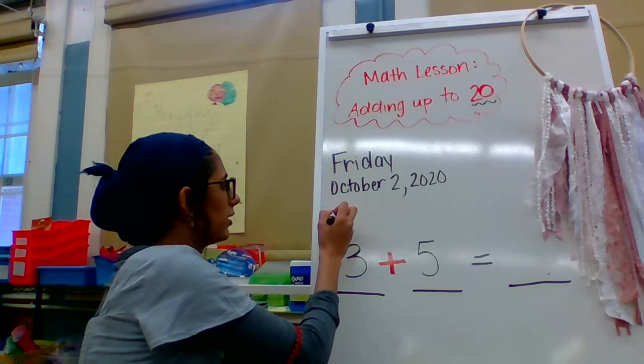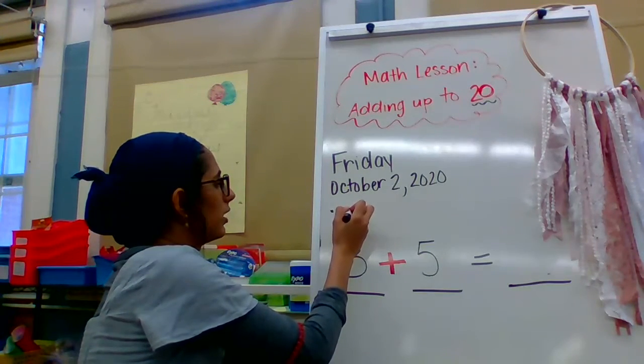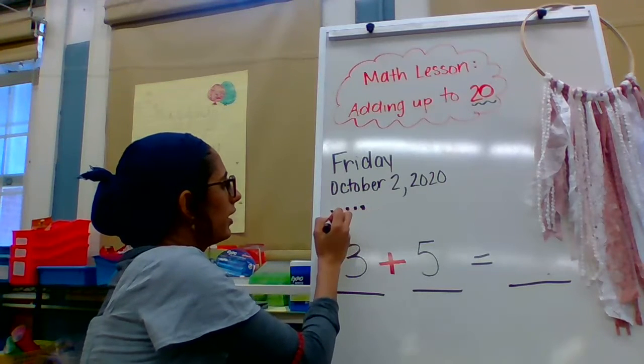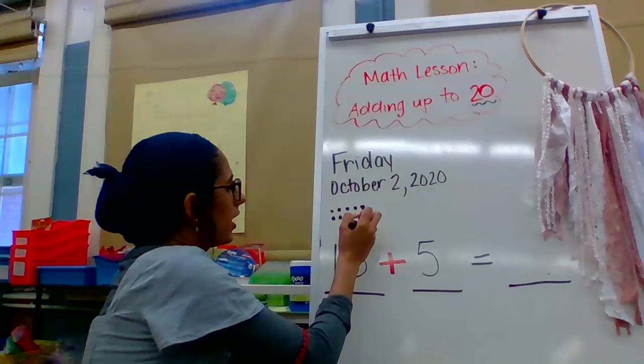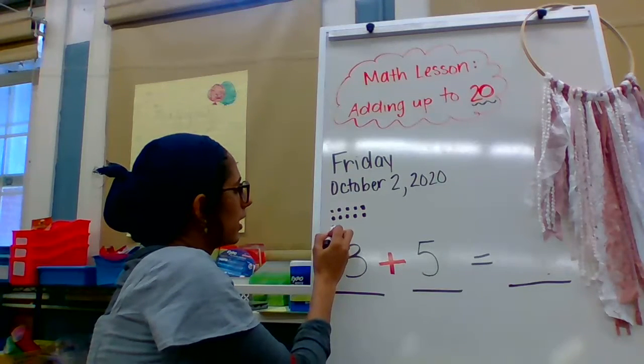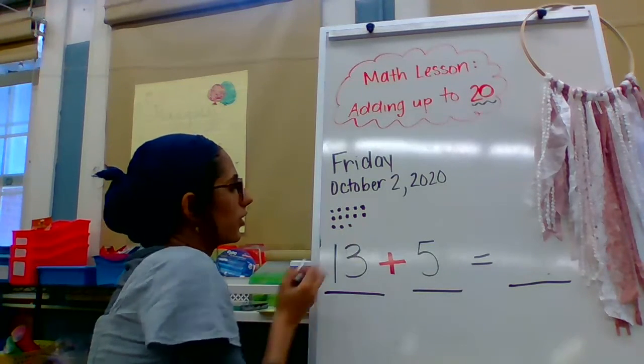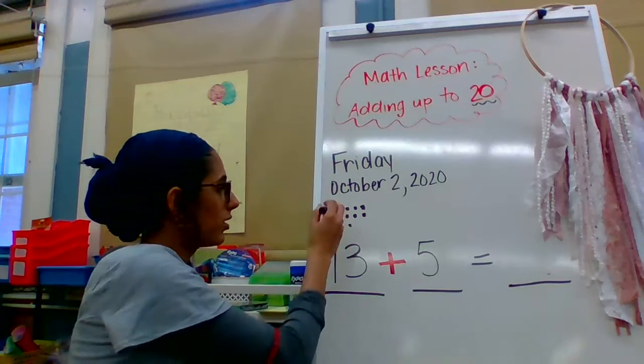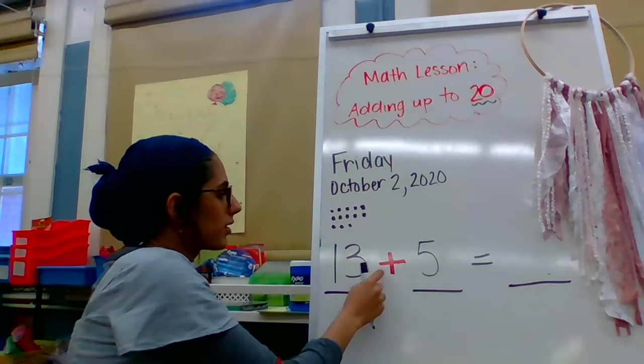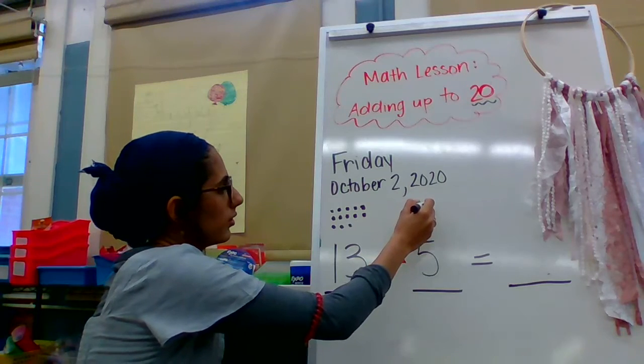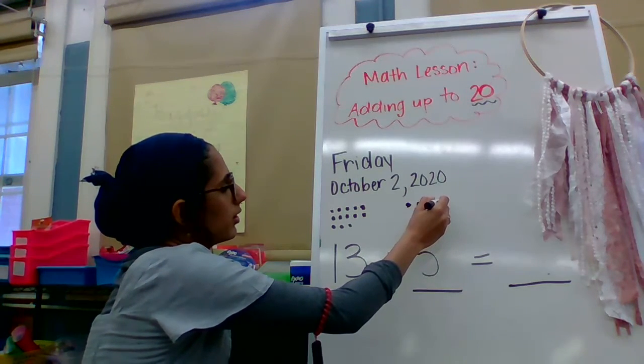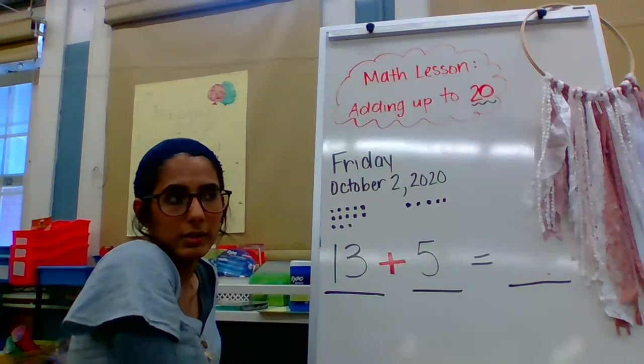13, let's draw 13. Okay. One, two, three, four, five, six, seven, eight, nine, 10, 11, 12, 13. So we have 13 circles plus five more. One, two, three, four, five. That's it, I'm done.